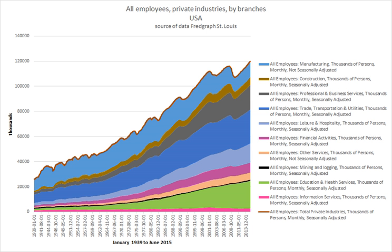Workplace democracy is the application of democracy in all its forms including voting systems, debates, democratic structuring, due process, adversarial process, and systems of appeal to the workplace. When an individual entirely owns the business for which they labor, this is known as self-employment. Self-employment often leads to incorporation. Incorporation offers certain protections of one's personal assets. Individuals who are self-employed may own a small business. They may also be considered to be an entrepreneur.